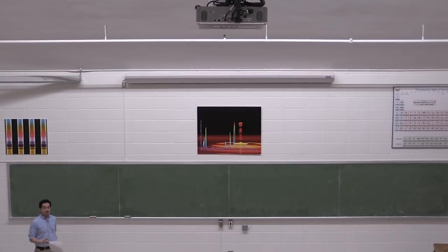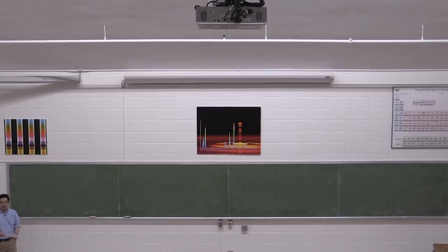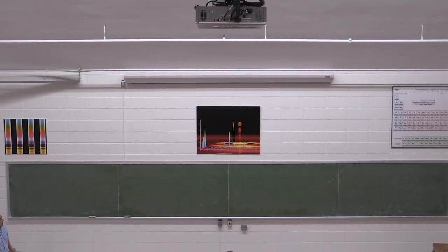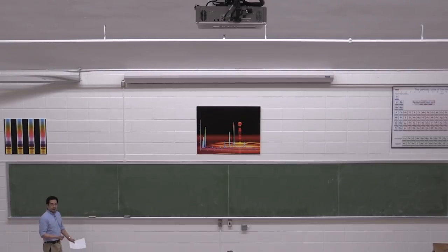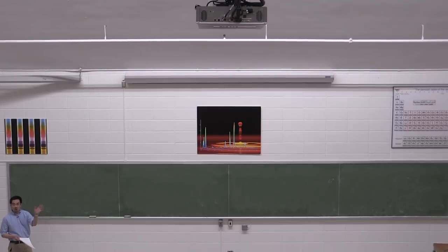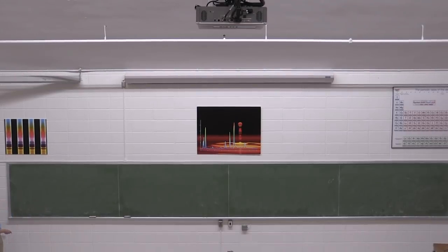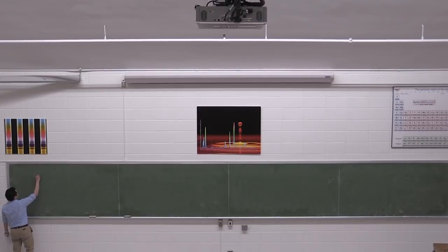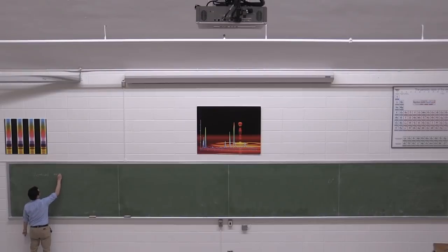We're going to continue our discussion on vibrations, and we're going to stick with the easiest one for now, which is the undamped free vibrations case. We just touched on it last class. We did the horizontal mass and spring. You're going to see a lot of these mass and spring systems. The next one is to consider what happens when we do a vertical version of a mass-spring system.